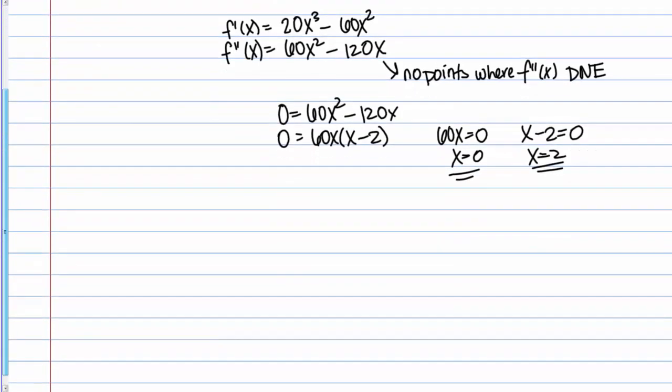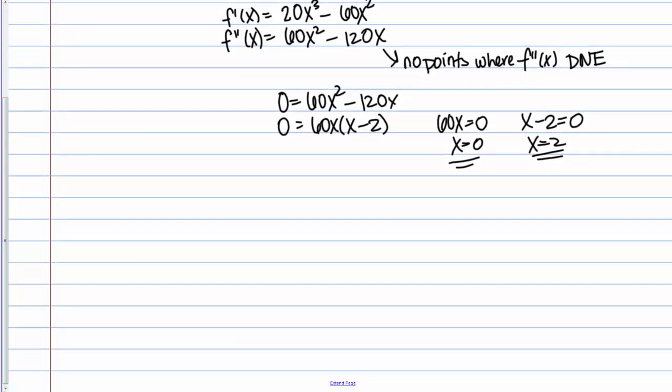I'm going to use the same chart setup that I would for the first derivative test. I'm going to put these numbers on a number line. These are x values, but what I'm actually going to be testing here is the sign of the second derivative, because that's what I care about in this case.